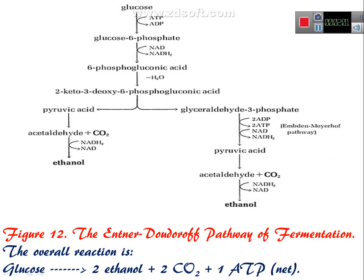Once you have pyruvate, in the presence of decarboxylase and dehydrogenase enzymes, it gets converted to acetaldehyde and carbon dioxide is released. The hydrogen and electrons are passed on in this anaerobic fermentation to yield an ethanol molecule. Similarly, the pyruvic acid formed here also undergoes conversion to acetaldehyde, carbon dioxide is liberated, and ethanol is formed.